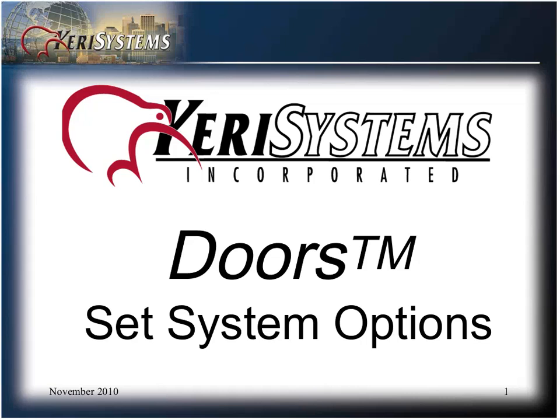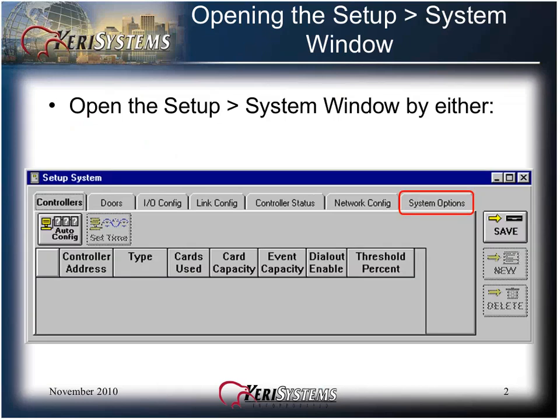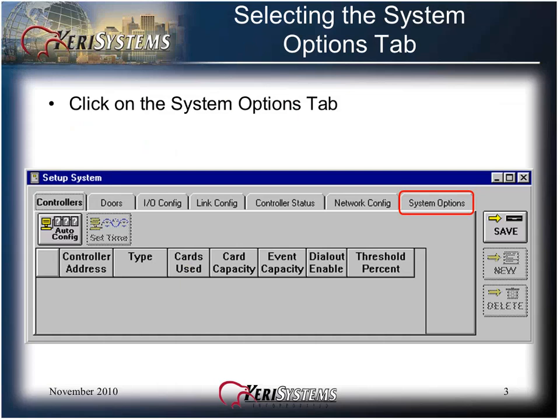As you turn on options, the appearance of some screens will change. Access the Setup System window by clicking on the toolbar button or from the pull-down menu. Select Setup and then click on System. Click the System Options tab.